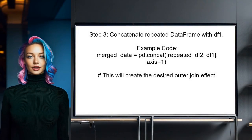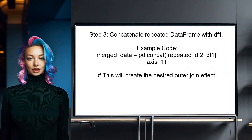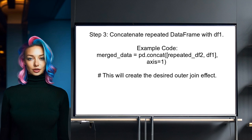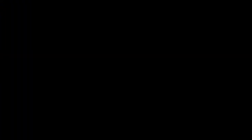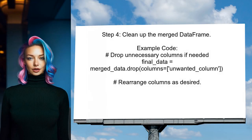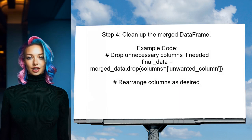Now the user can concatenate the repeated data frame with the first data frame. This will create the desired output where each entry from the first data frame is paired with every entry from the second data frame. Finally, the user can clean up the data frame by dropping any unnecessary columns or rearranging them as needed. This will help in moving to the next steps of their code.